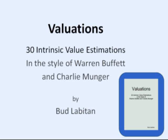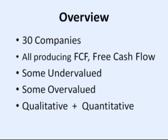Valuations: 30 Intrinsic Value Estimations in the Style of Warren Buffett and Charlie Munger, by Bud Lubiton. The author wanted a book that took a practical approach similar to that talked about by Mr. Buffett and Mr. Munger, so he used an approach that emphasized qualitative factors. He also wanted a book that illustrated a fair way to estimate quantitative intrinsic values using real free cash flows and number of shares outstanding.